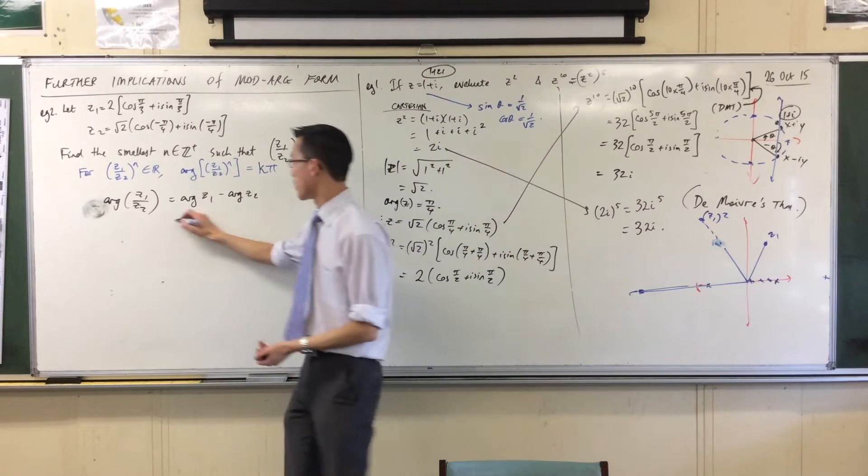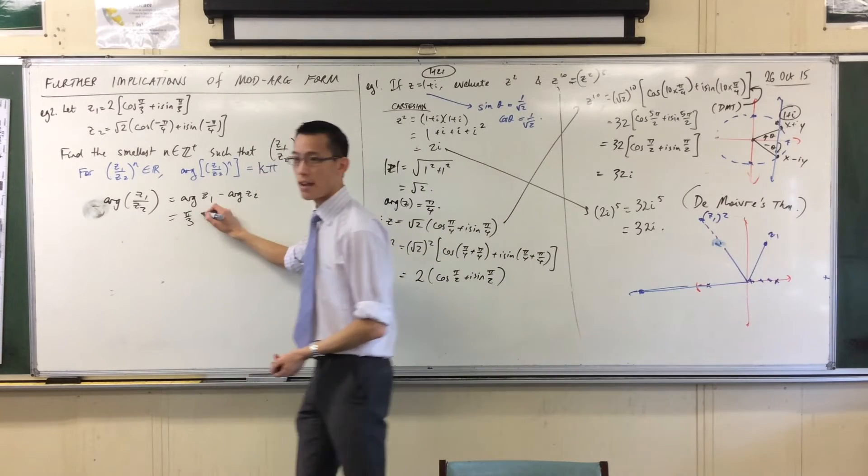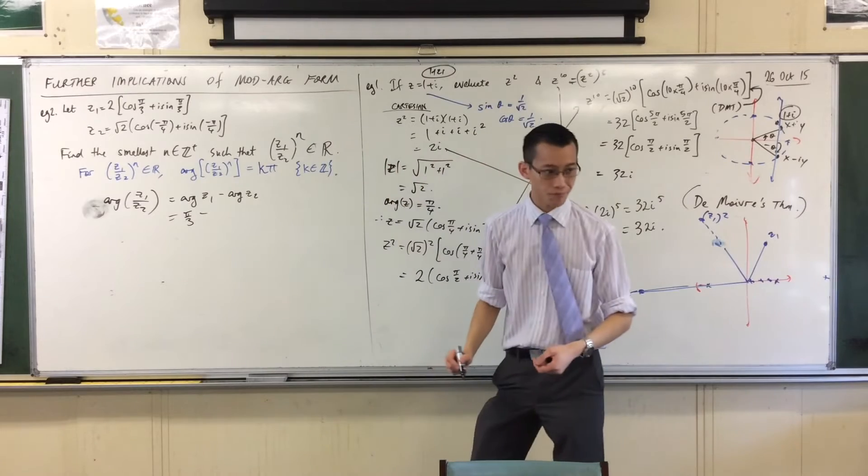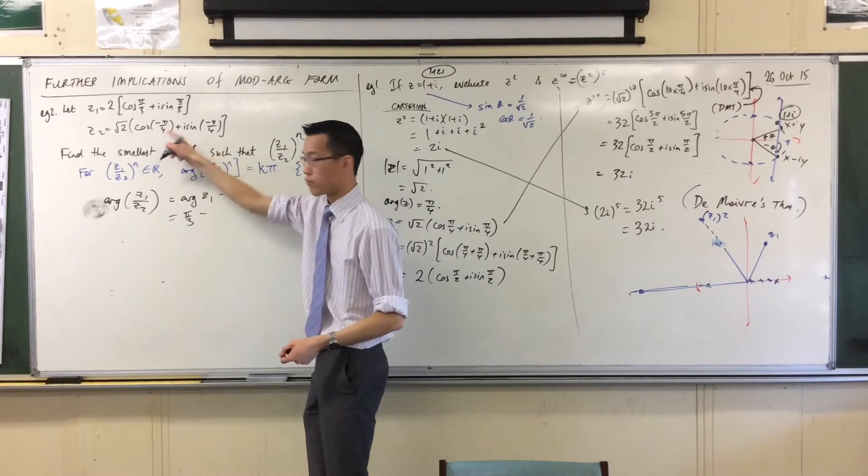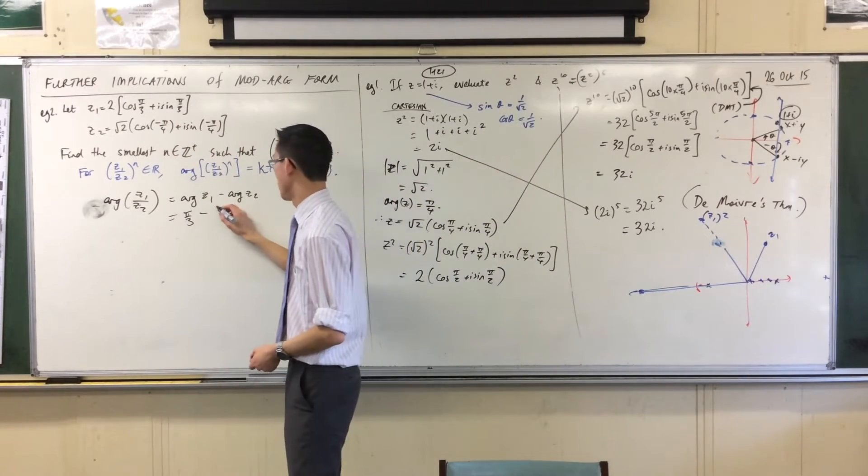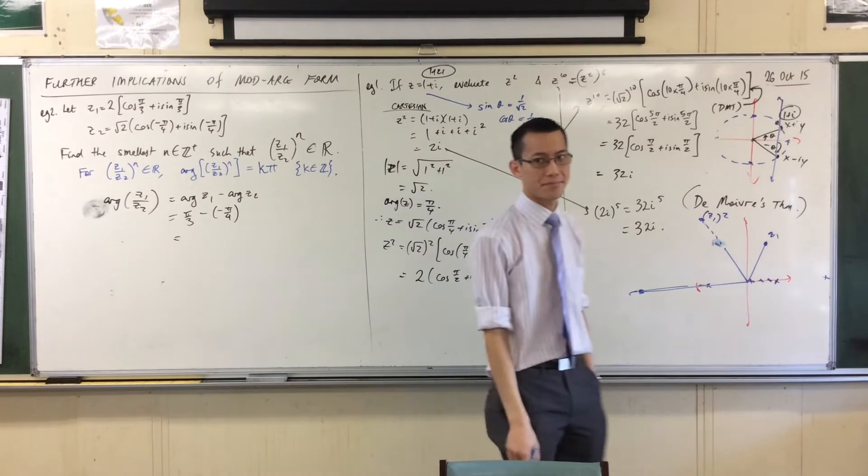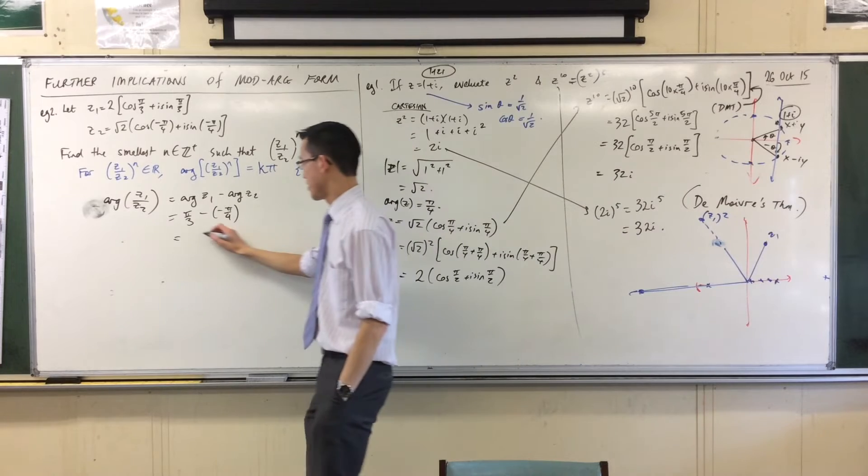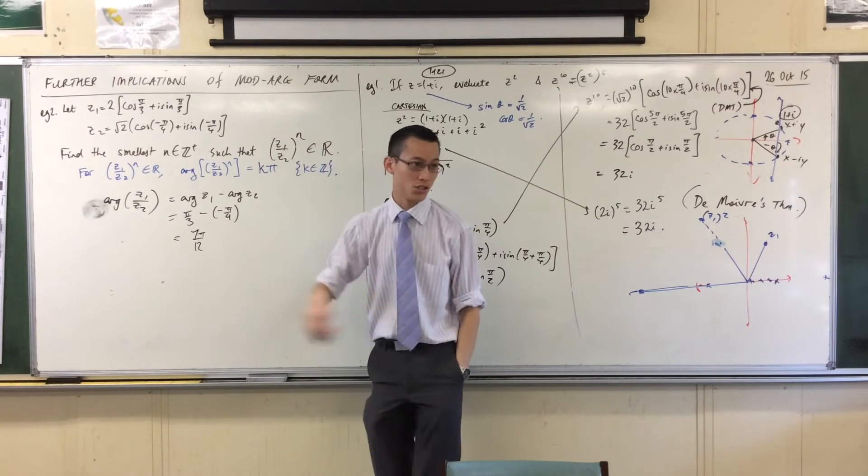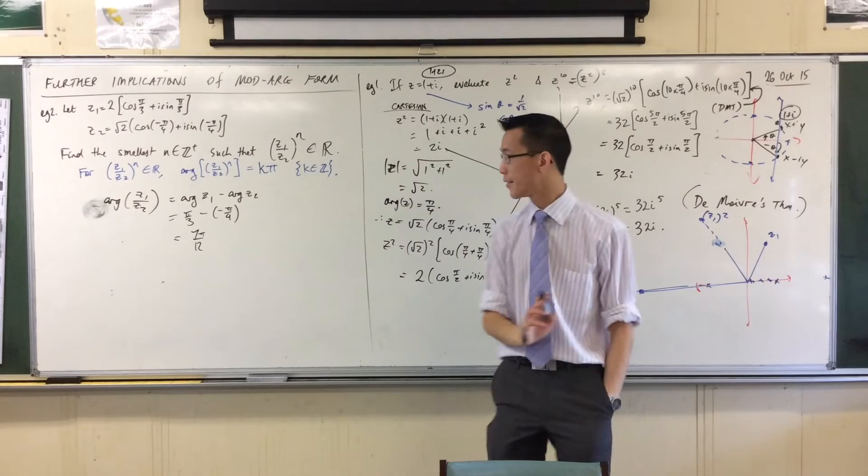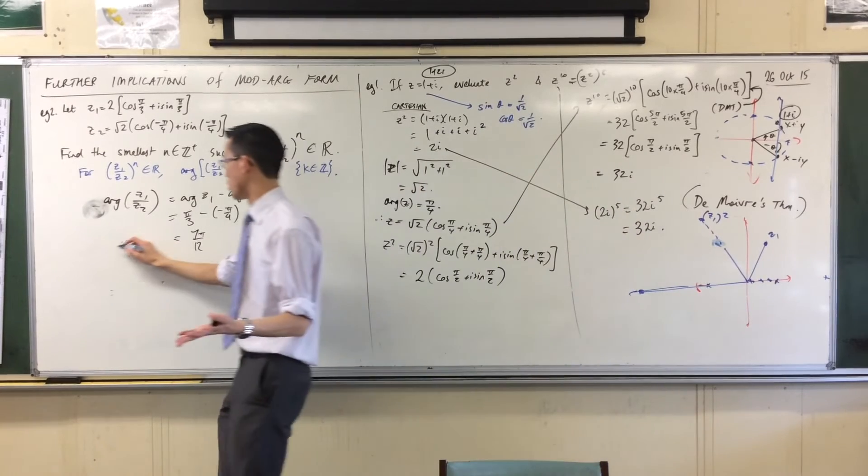Subtract arg z2. Are you okay with that? So, I've got the first argument here, π/3, I'm subtracting what argument? Negative π/4. Negative π/4, I'm just reading it off. So, what's this? 7π/12. Because I'm adding, you do your common denominator, it's fine. So, that's just what happens when I do it once.